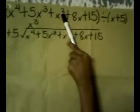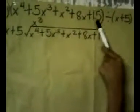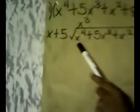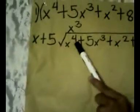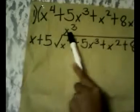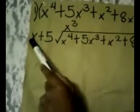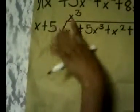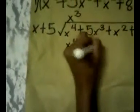5x cubed plus 8x squared plus 8x plus 15 divided by x plus 5. Dividing x to the 4th power by x, the answer is x cubed. x cubed times x is equal to x to the 4th power. x cubed times 5 is equal to 5x cubed.